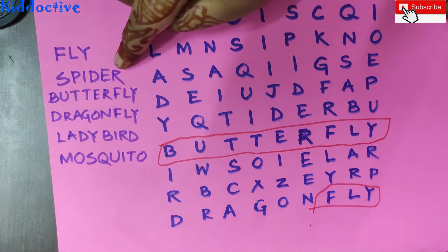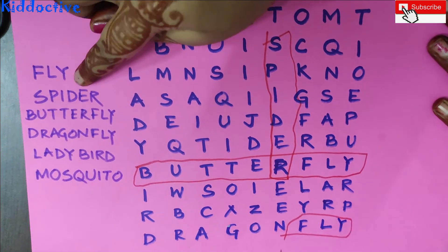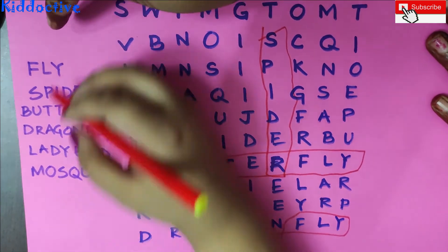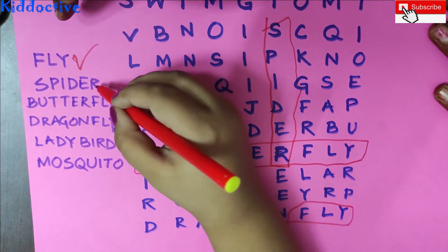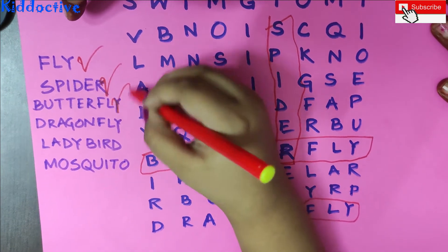Now you can write the spider. Tick. Spider and butterfly.